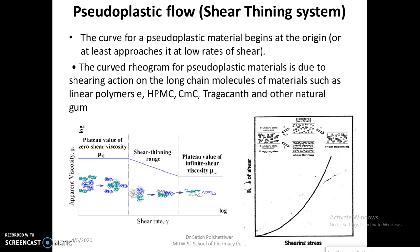Pseudoplastic flow is also called a shear thinning system — the system becomes less viscous when shear is applied. This behavior is mostly seen in polymers such as HPMC (hydroxypropyl methylcellulose), CMC (carboxymethylcellulose), tragacanth, xanthan gum, and other natural gums. When these polymers are placed in water, their hydroxyl groups attract water molecules and the polymer swells through hydration. Initially these swollen polymers form a highly viscous gel-like structure.